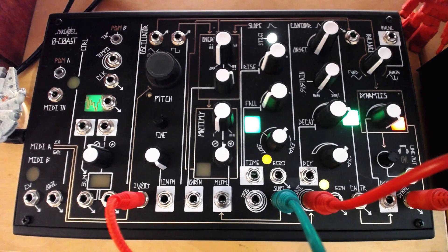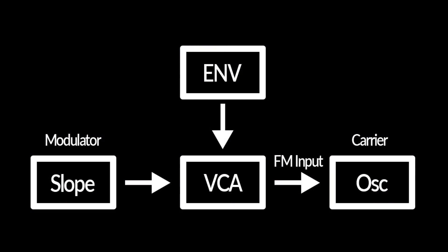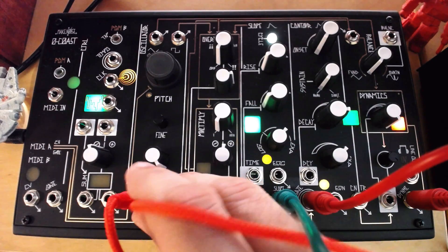If we route our modulator through a VCA, we can change the index over time. This is critical to shaping FM sounds, but will require some other Eurorack modules.